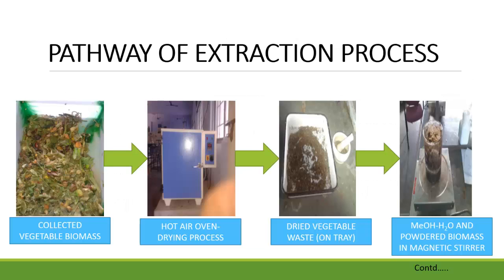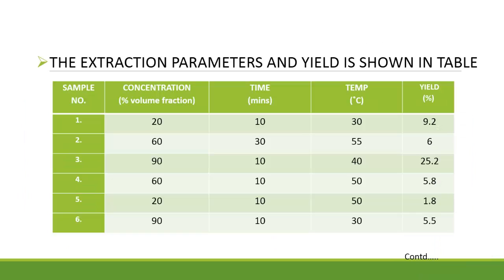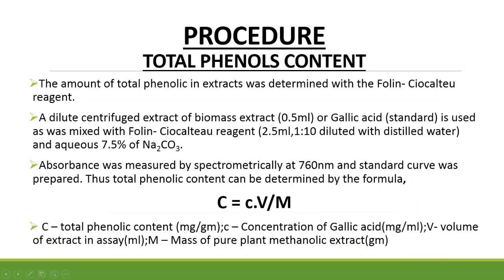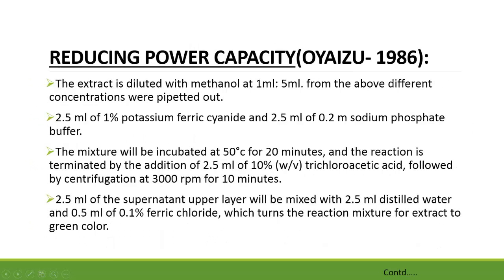This is the pathway of the extraction process as discussed. These are the extraction parameters and the yield is shown in the table — the last column shows the yield. This is the procedure for the total phenol content determination, evaluated on the basis of the Folin-Ciocalteu reagent. The formula is given in bold letters: C = CV/m.